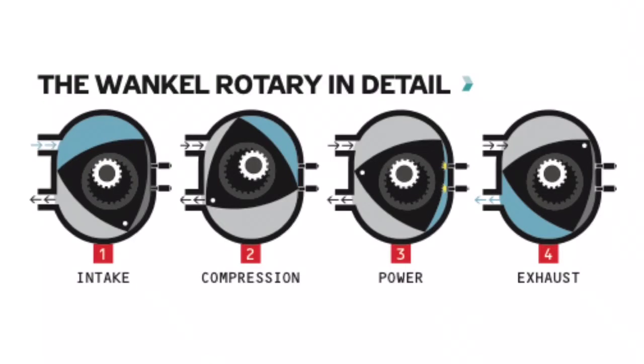In a rotary engine — I'll insert images throughout the video — the parts spin continuously in one direction. They are internally balanced with counterweights, which cancels out pretty much any vibrations within the engine, making for a smoother ride.